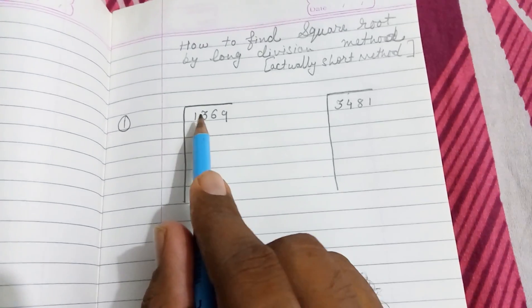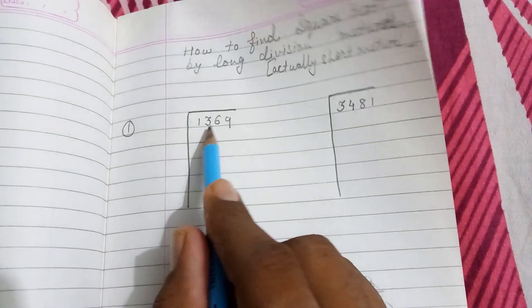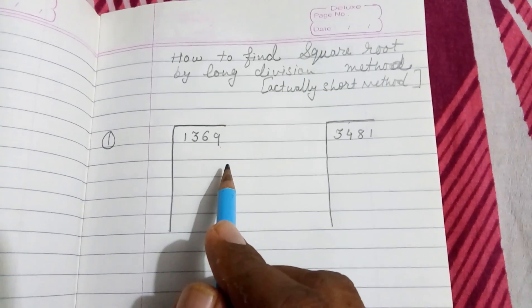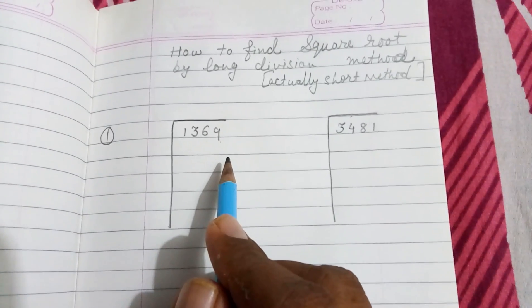Look at this, our first question. They have given you: find the square root of 1369 by long division method. First, we have to make pairs of numbers from the back side, like this way, two pairs, and then we have to start solving by looking at the first two digit number.